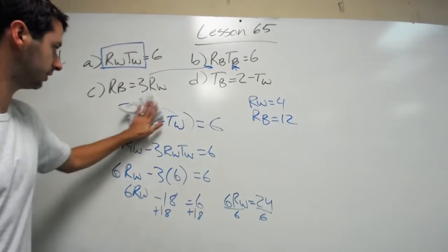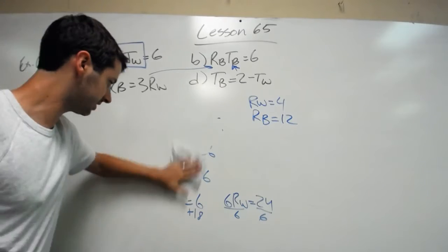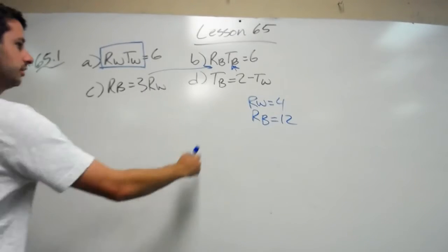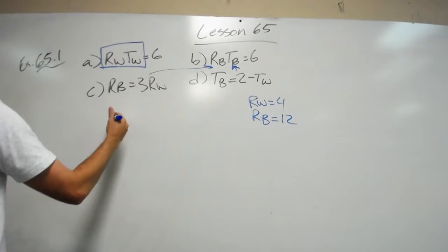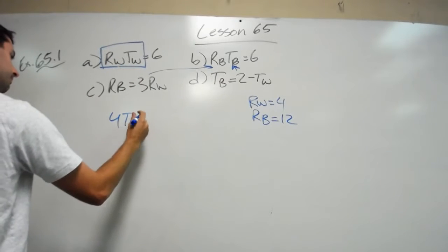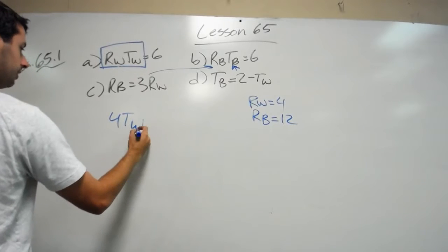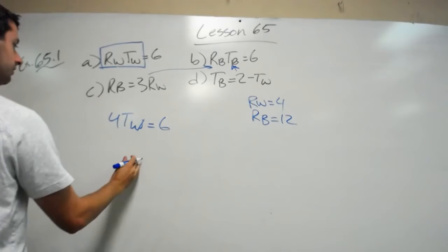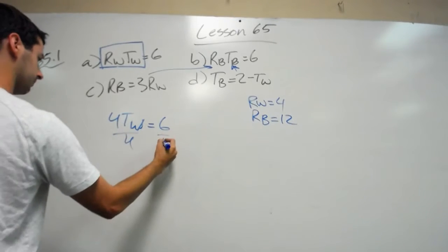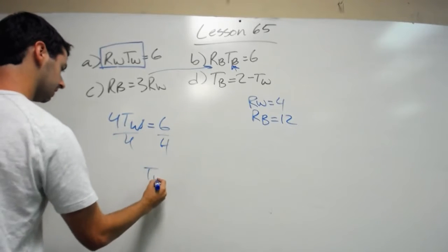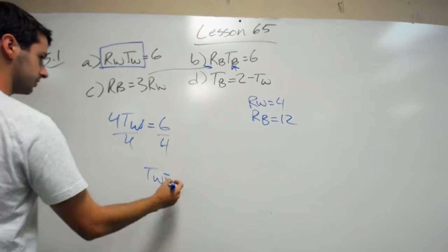Now we find tw and tb. So I'm going to plug in 4 for here. 4tw equals 6 divided by 4. So tw equals 6 over 4 reduced is 3 over 2.